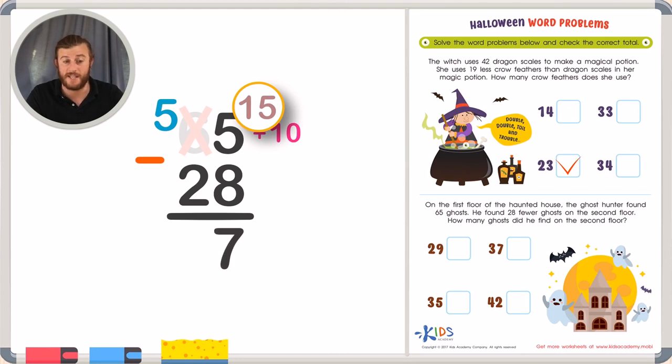And now we'll subtract the tens place. 5 minus 2. 2, 3, 4, 5. 5 minus 2 is 3, giving us an answer of 37.